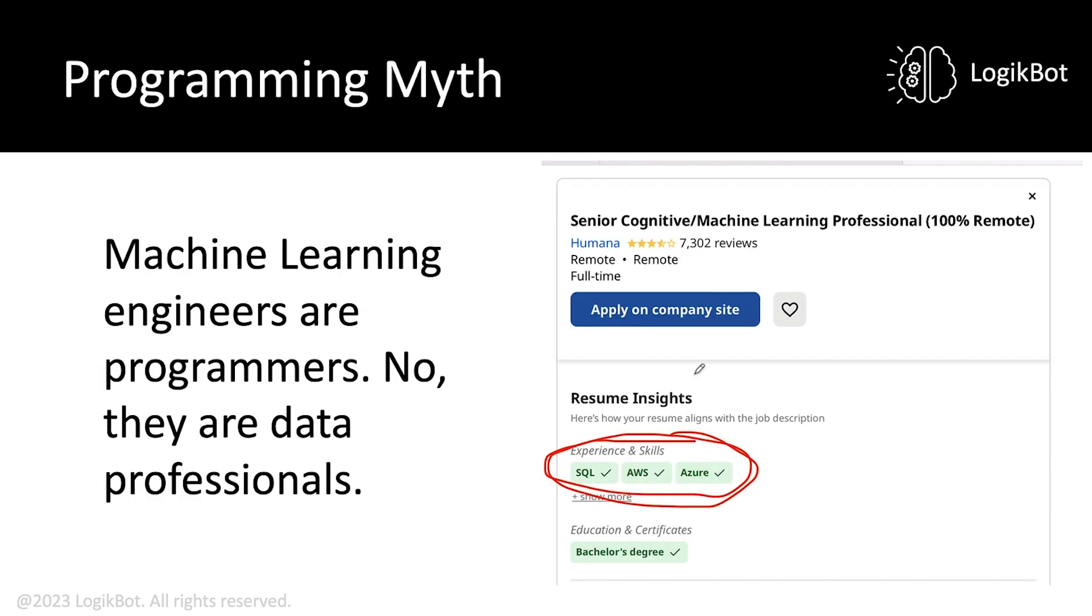Let's move on to the programming myth. Machine learners are programmers. You'll see this all the time. No, they are data professionals. Here is at Humana. Humana is a pretty big company, it's very big. Machine learning professional, they don't know what the job is. This is really a machine learning engineer. And you can see they don't even list any machine learning skills. I wonder why that is.